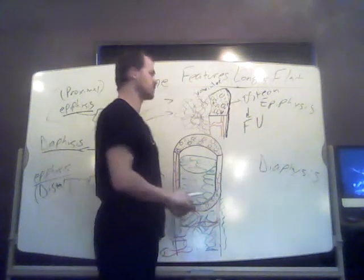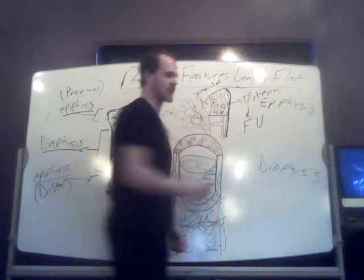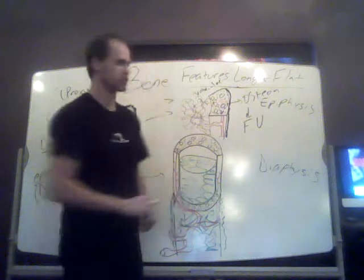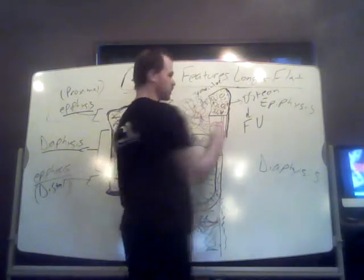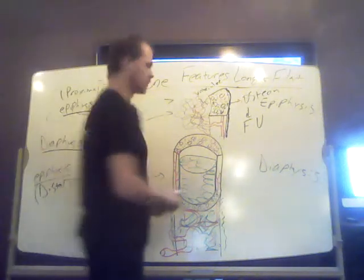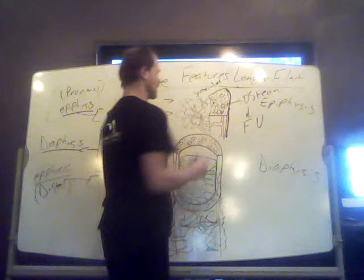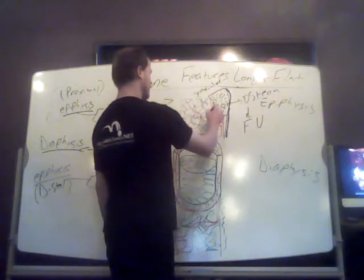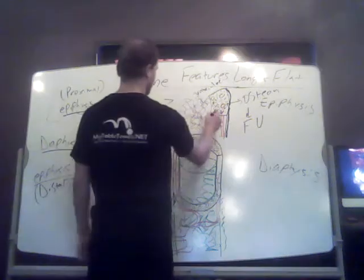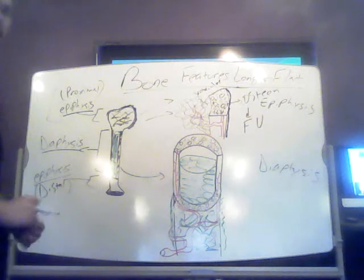Osteons are basically just a system of canals and cells. They're a system of canals called Haversian canals, and surrounding these canals are osteocytes that are embedded within the bone tissue. These cells want to be close to the blood — close to oxygen and also to eliminate waste. So you have all these circular Haversian canals with cells surrounding them. Compact bone is essentially a big canal network of blood vessels and bone cells.